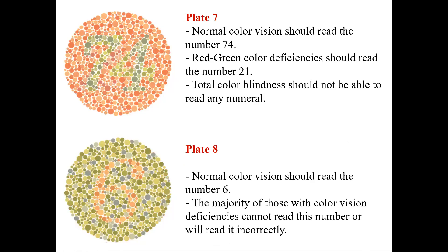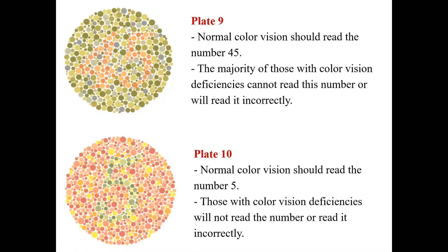In plate 7, normal people read 74, green deficiency or blindness reads 21, and total color blindness cannot read any number. In plate 8, normal people read 6, green color deficiency or blindness cannot read any number. In plate 9, normal people read 45; in plate 10, normal people read 5. People with green color blindness cannot read any number in plates 9 and 10.